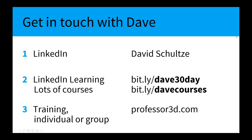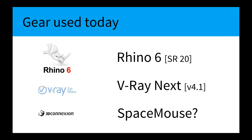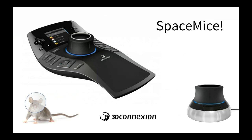Today we're going to be using Rhino 6. There have been 20 service releases, and only the last three are working with V-Ray Next. They changed the name — it used to be version 3.5 then 6, now it's Next, which is actually version 4.1. There's a very new release that came out a week or two ago. I'm also using the Space Mouse, a 3D navigator. All the software and hardware mentioned is available at your friendly Novege retailer.